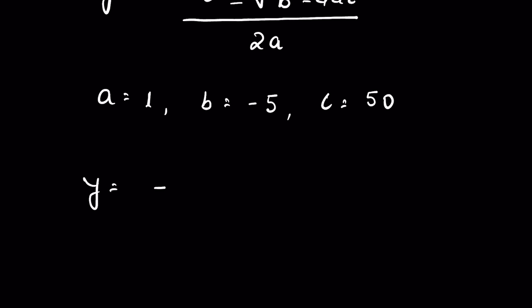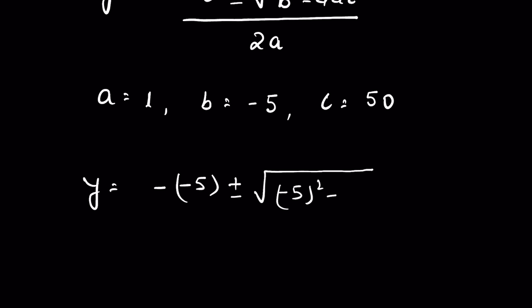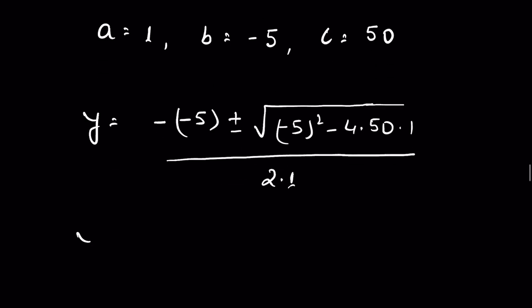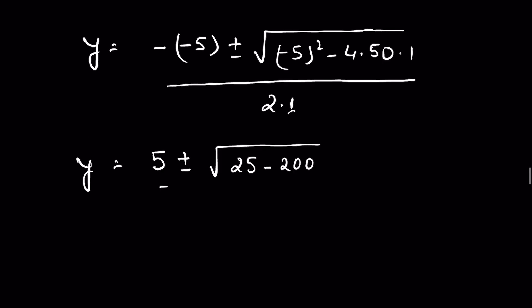So y is equal to negative of minus 5, plus or minus the square root of minus 5 squared minus 4 times 50 times 1, all over 2 times 1. That gives us y equals 5 plus or minus the square root of 25 minus 200, over 2.